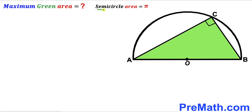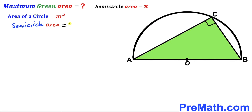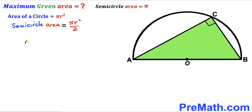The area of this semicircle has been given to us as pi square units, and now we need to find the radius r. Recalling the area of a circle formula: area equals pi r squared. Since we are dealing with a semicircle, the area is half of pi r squared, so we write pi r squared divided by 2. Substituting the given area: pi equals pi times r squared divided by 2.